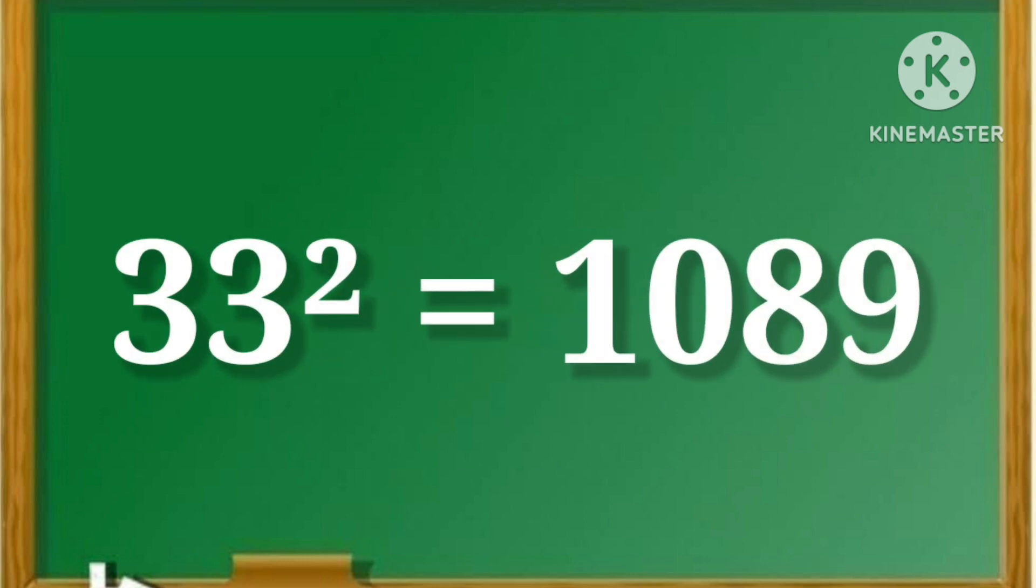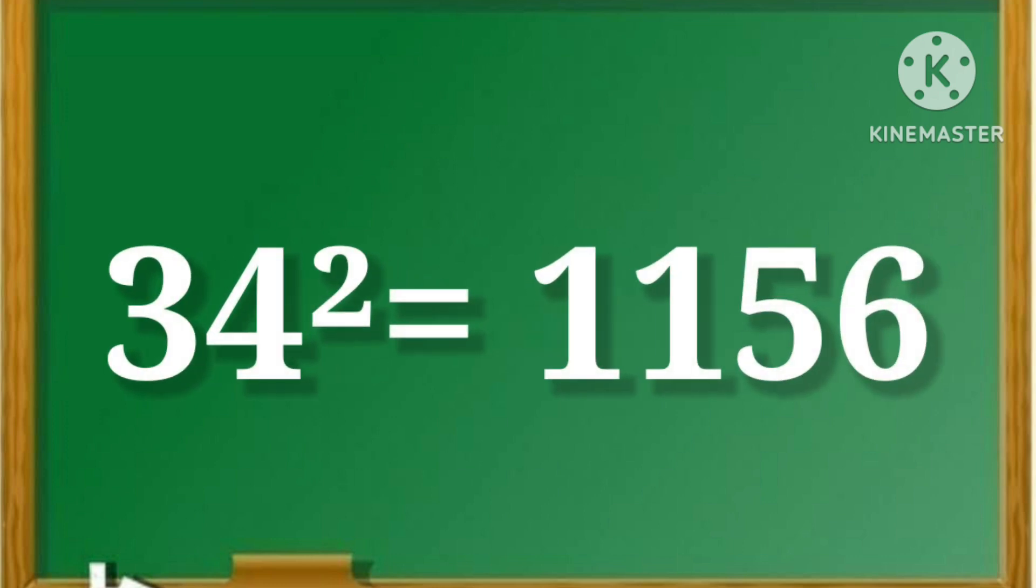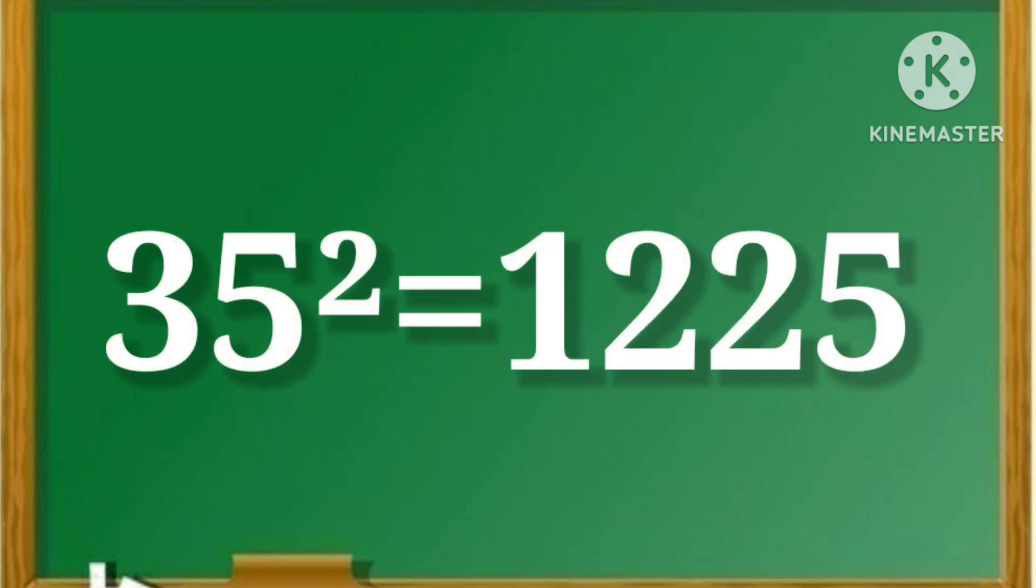33 square is equal to 1089. 34 square is equal to 1156. 35 square is equal to 1225.